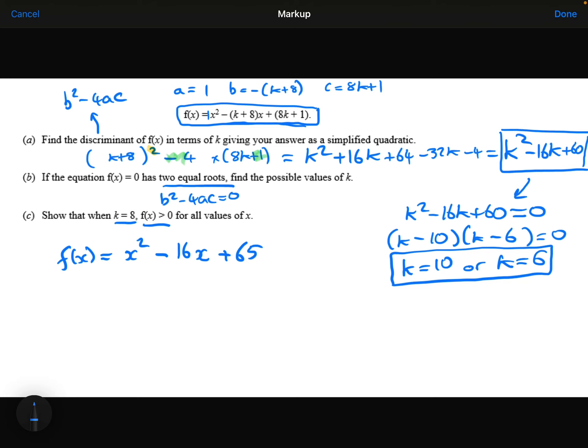Easiest way to do that is by completing the square. So I'm going to half the 16 to get the perfect square. I would need to subtract 64 and then add 65, which gives plus 1.